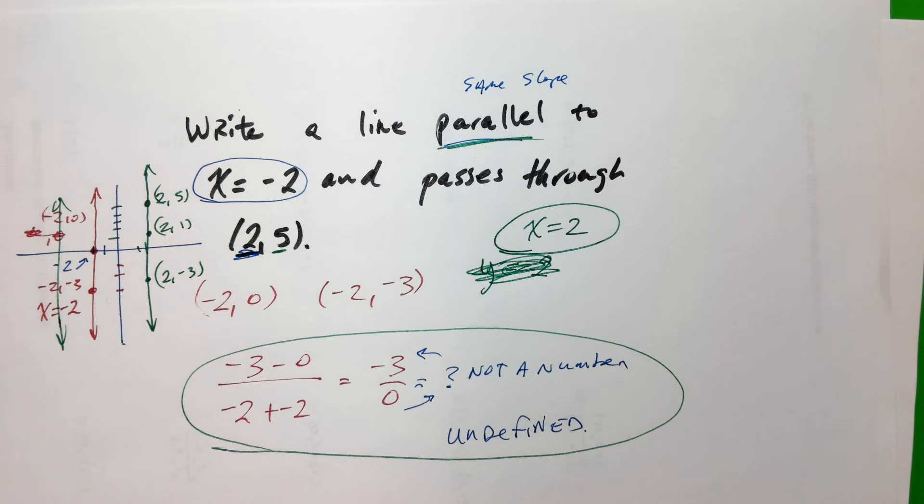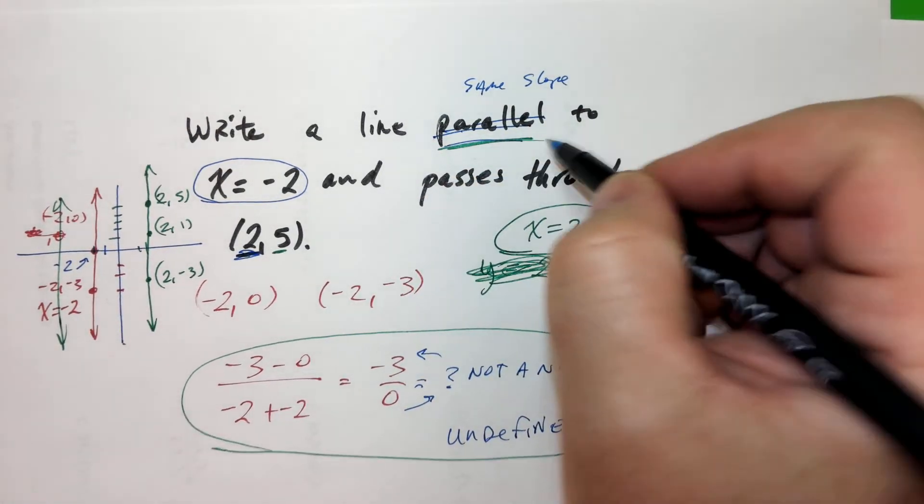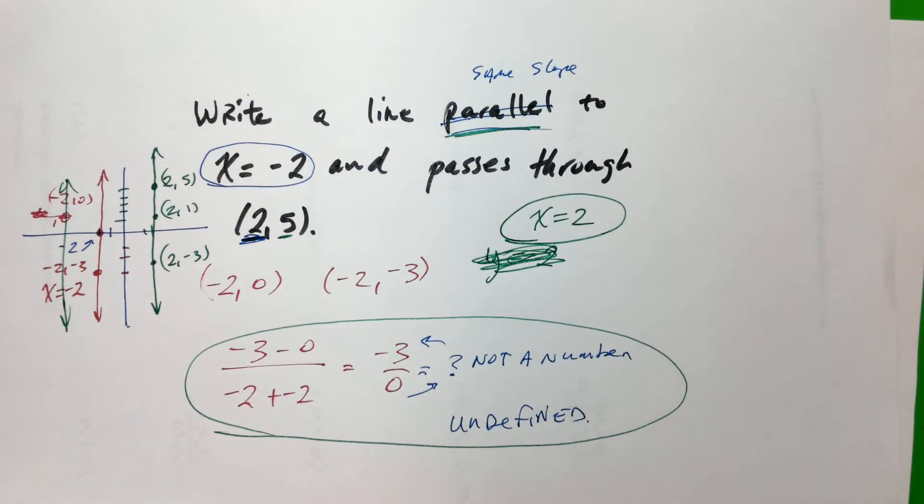So if the problem was Y equals negative 2? That would be different. We'll get to that in one second. Instead, we're going to do Y next. But what if this said instead of parallel, what if it was perpendicular? Here, we'll go to another page for that because that's kind of tricky.